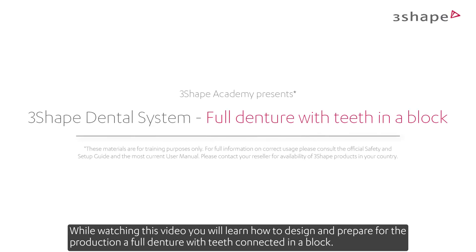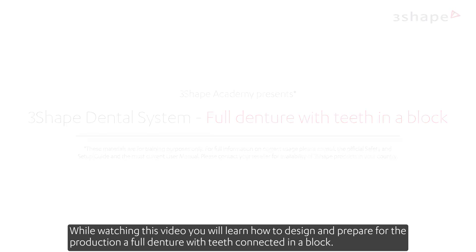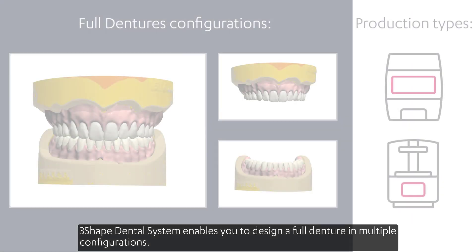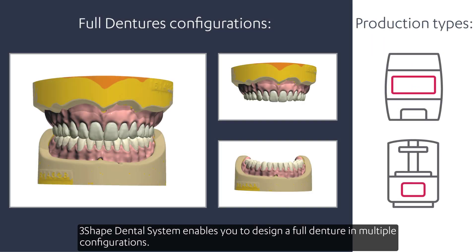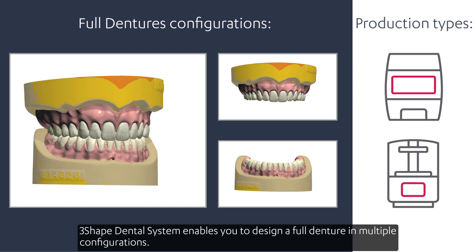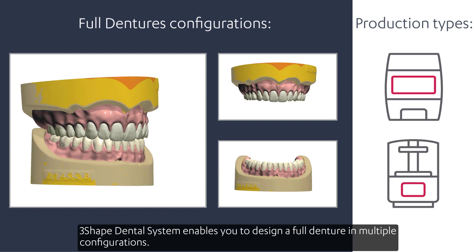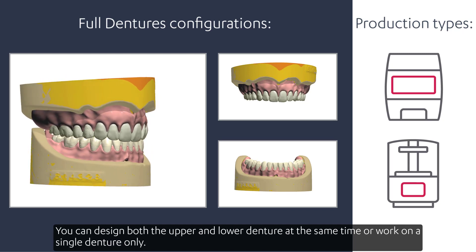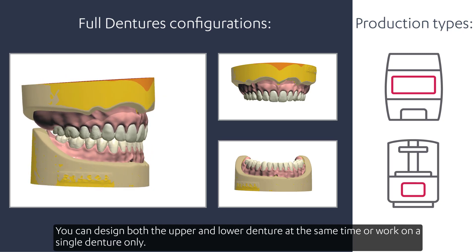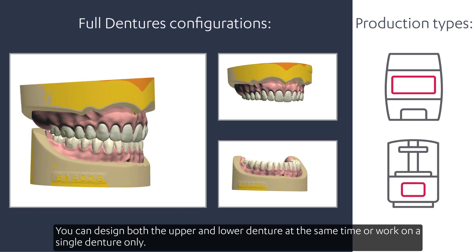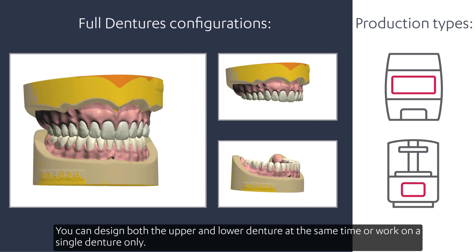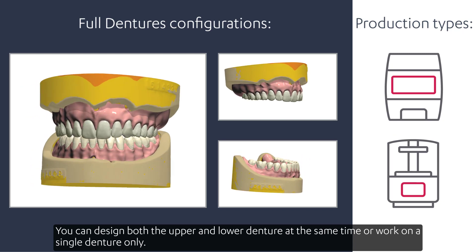While watching this video, you will learn how to design and prepare for the production a full denture with teeth connected in a block. The Three-shaped dental system enables you to design a full denture in multiple configurations. You can design both the upper and lower denture at the same time, or work on a single denture only.